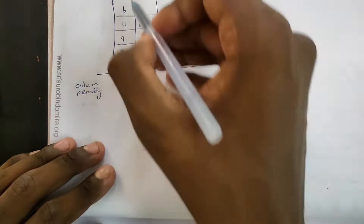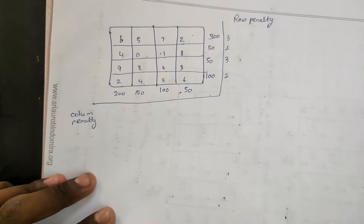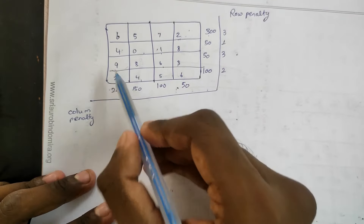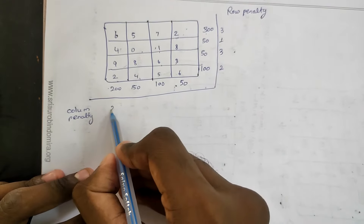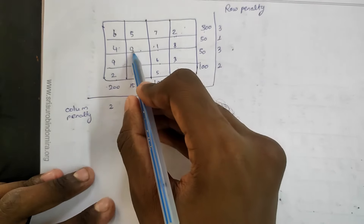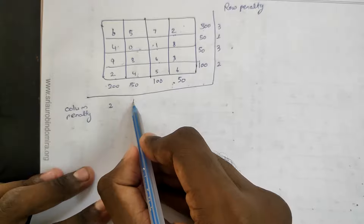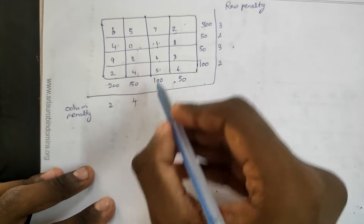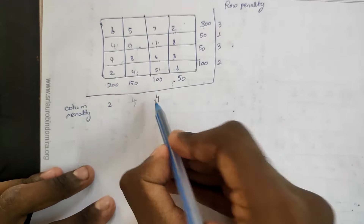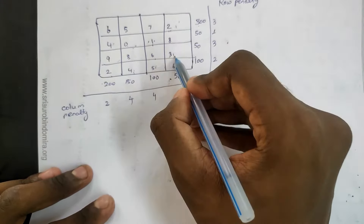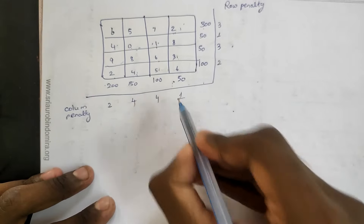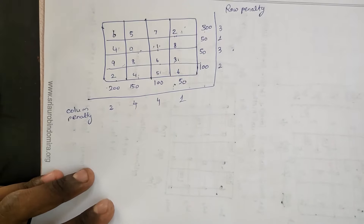That is the column penalty. The least 2, with 4 length — 2 subtracted gives 2. Least 0, with 4 length — 0 subtracted gives 4. Least 1, with 5 length — 1 subtracted gives 4. Least 3 and 2, least 2 and 3. This is the first step.